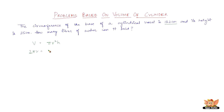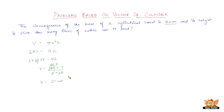2πr equals 132 cm. We have 2 × (22/7) × r = 132. So r = 132 × 7 / (2 × 22). Solving this, we get r = 21 cm, and we already have h = 25 cm.